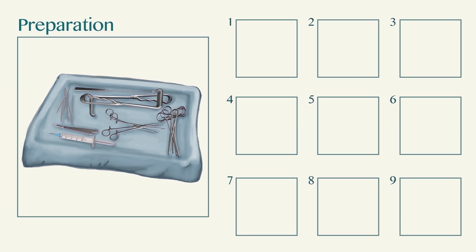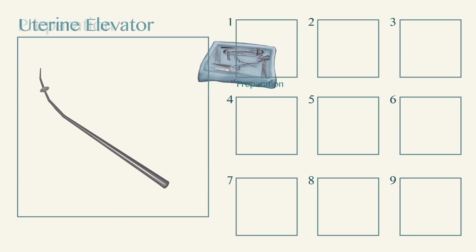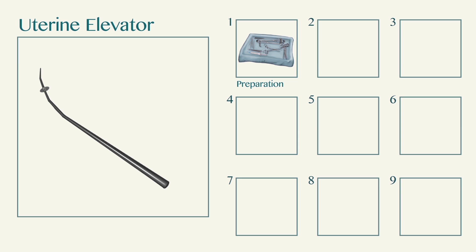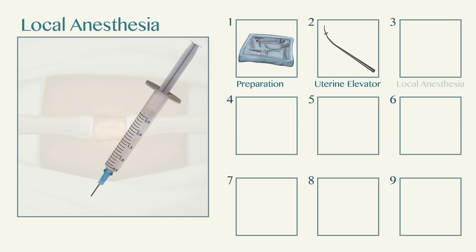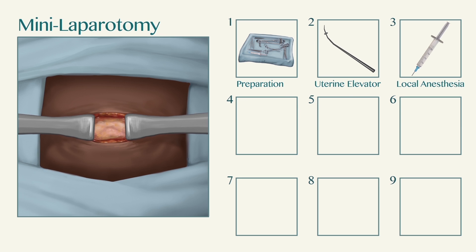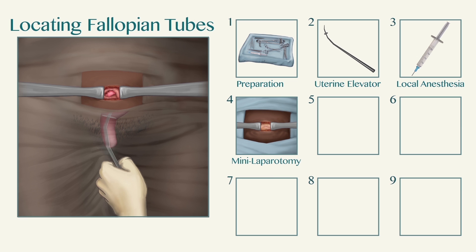The chapters cover: preparation, use of the uterine elevator, administering local anesthesia, creating the mini-laparotomy, and locating fallopian tubes.